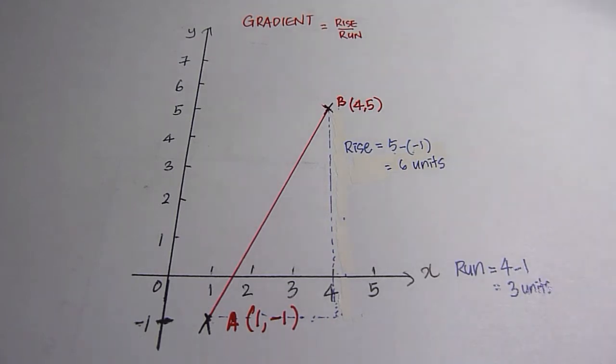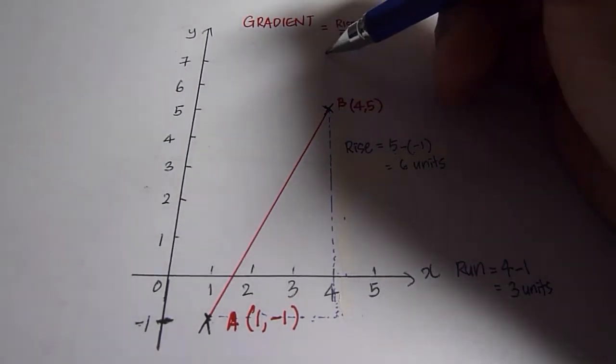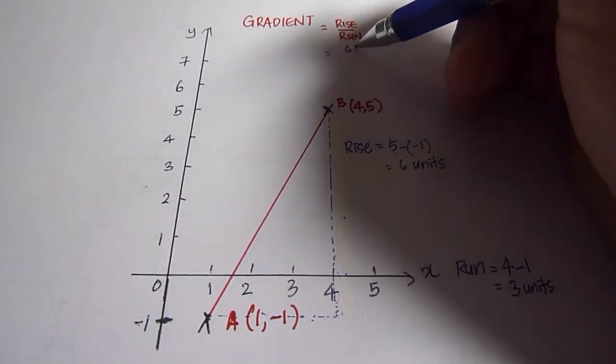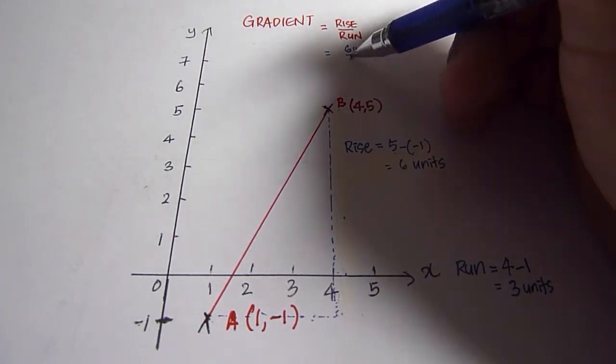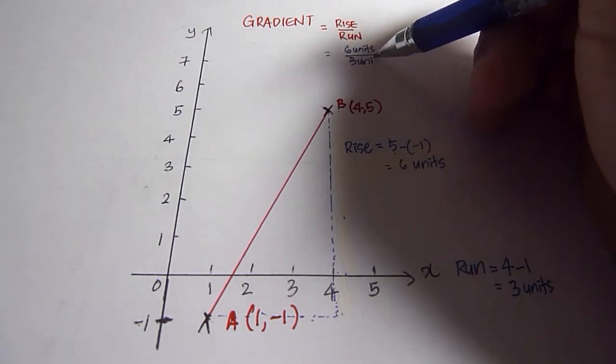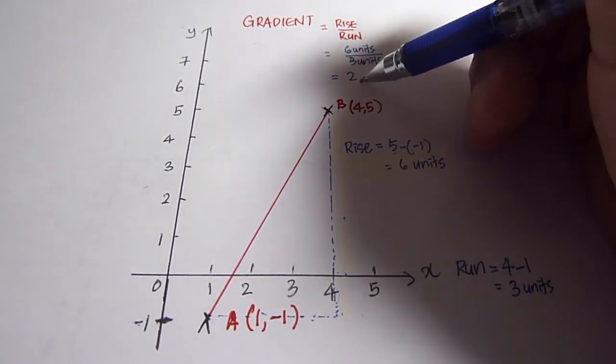Now, putting it back to this formula, we have six units divided by three units, and therefore, gradient is two.